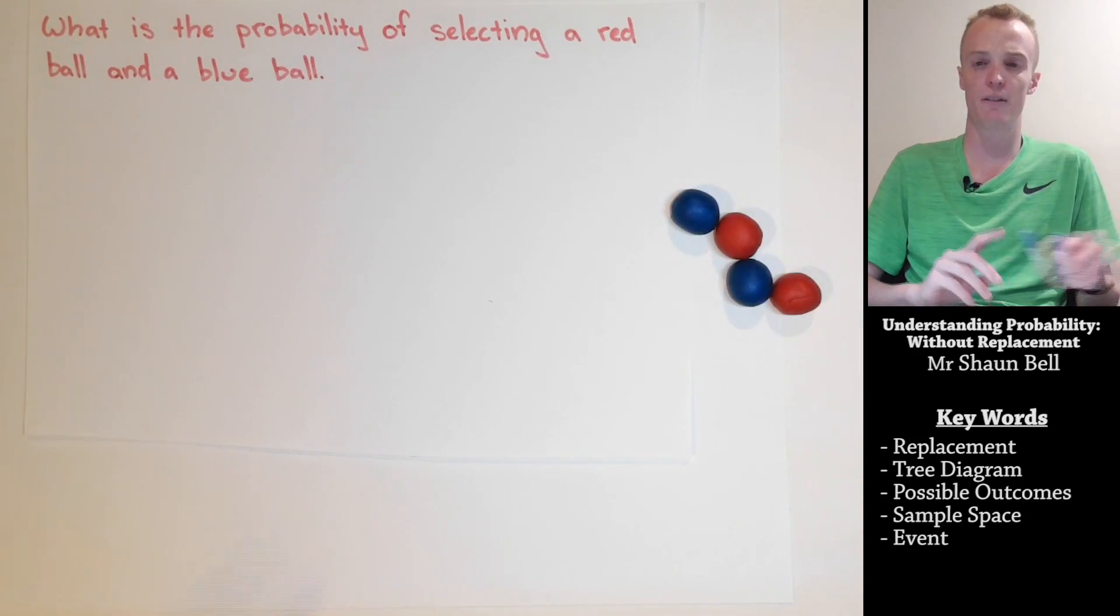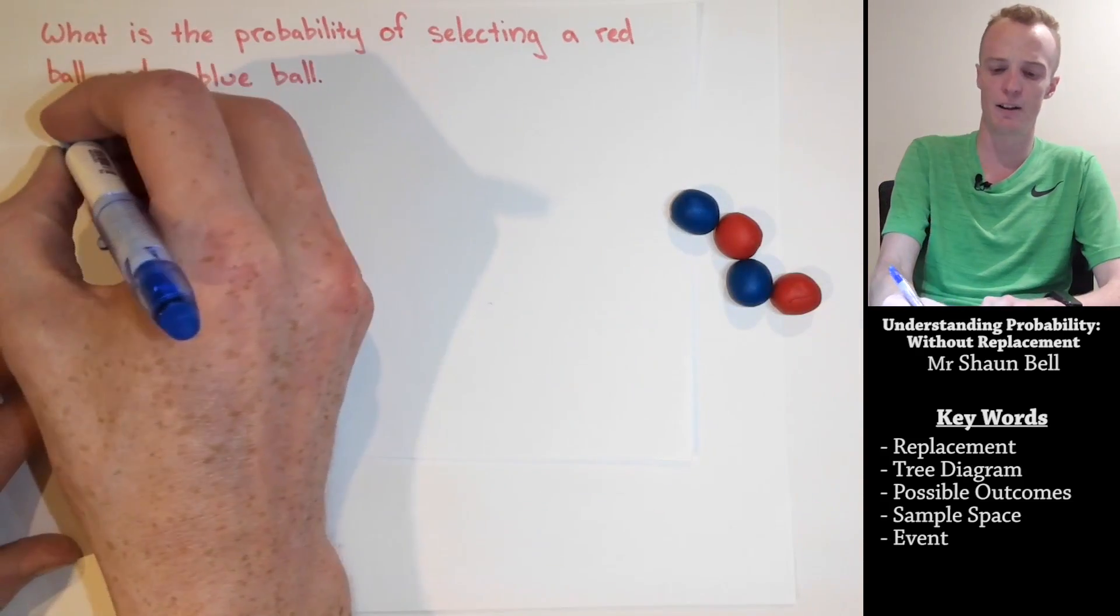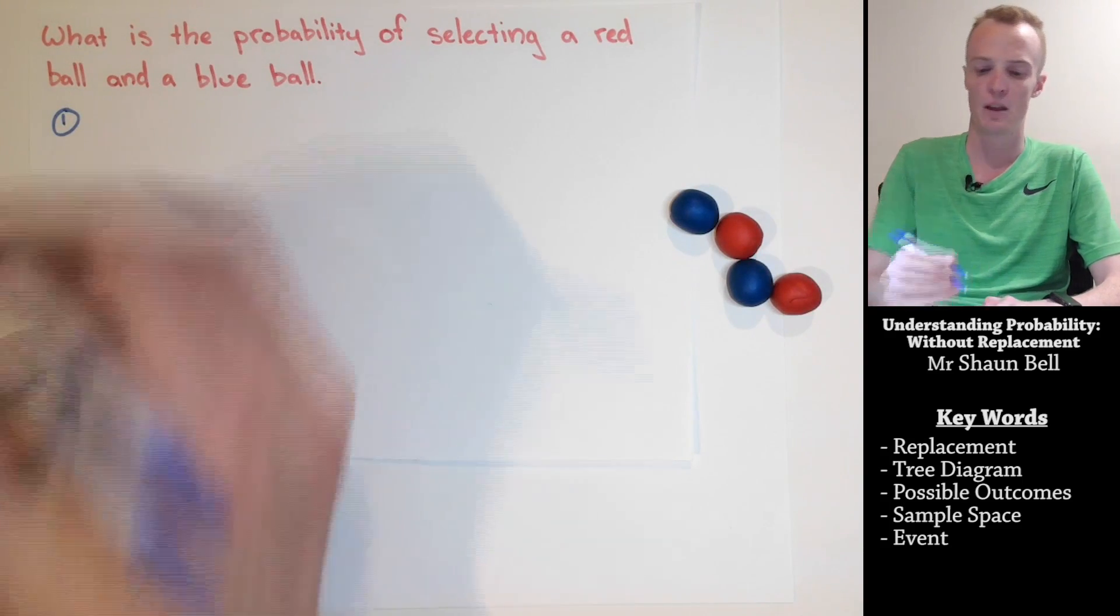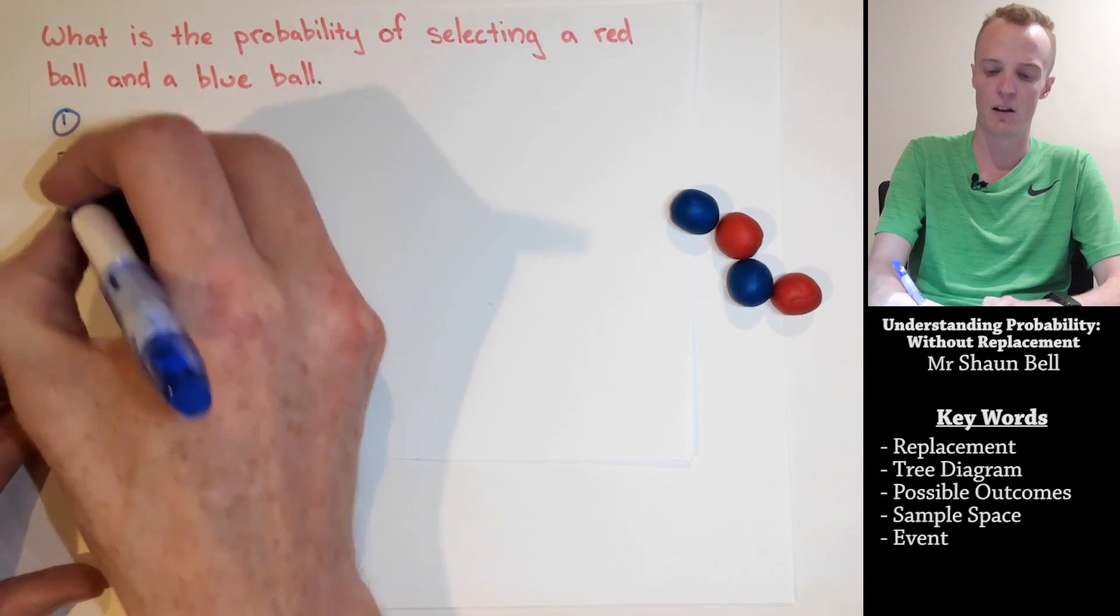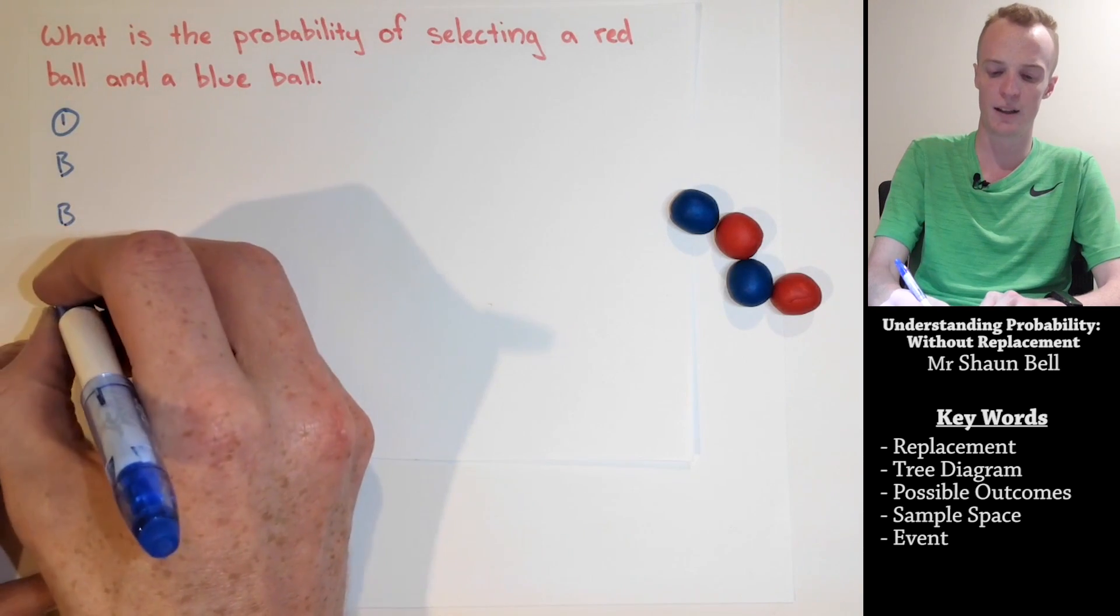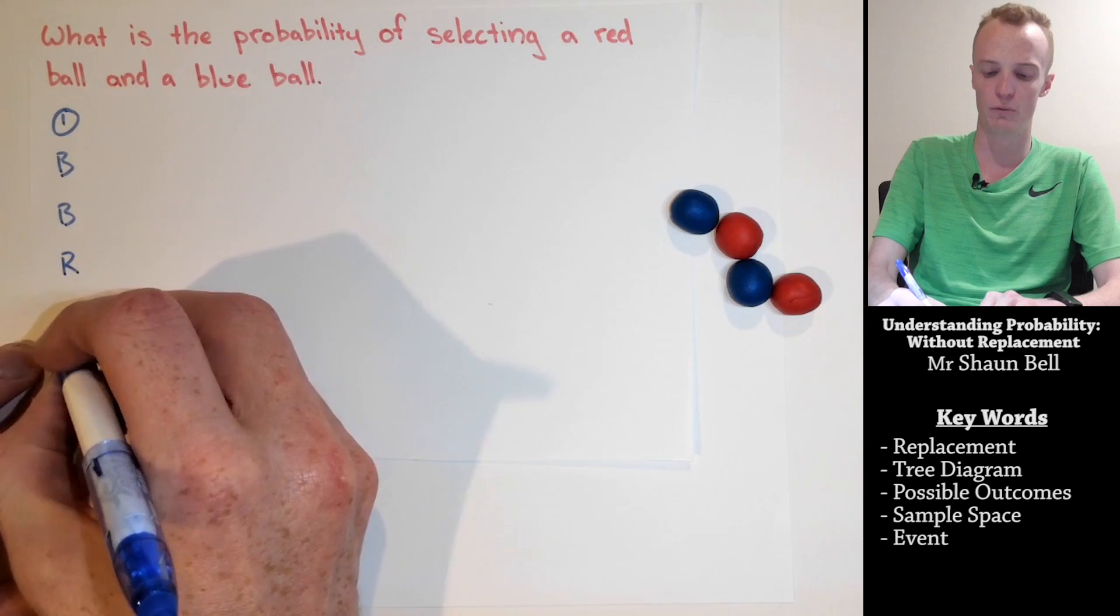So, with our tree diagram, we start by considering on the first selection what our outcomes could be. Well, we could select either one of the two blue balls, and we could select either one of the two red balls.